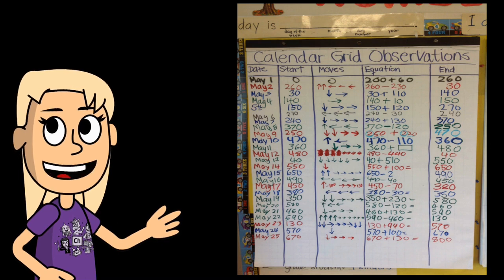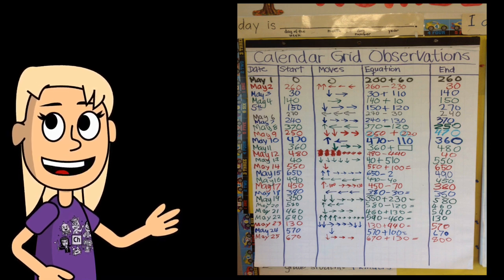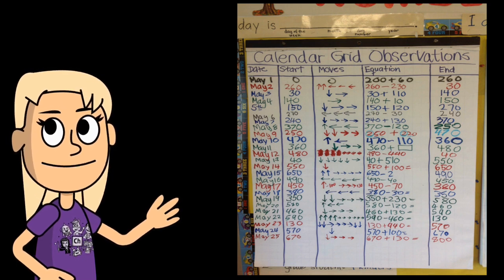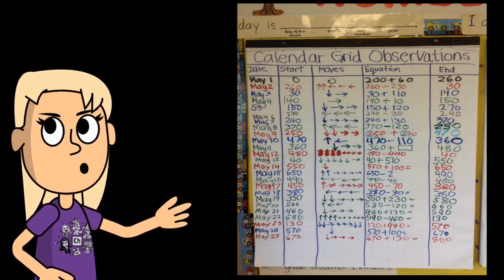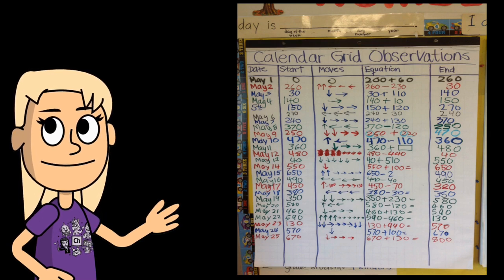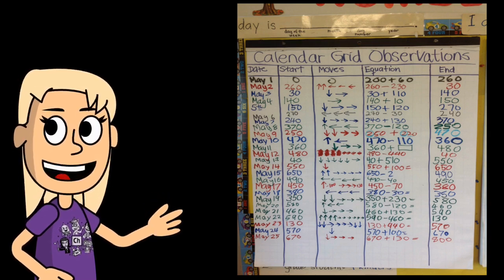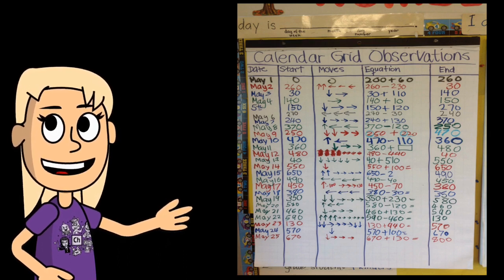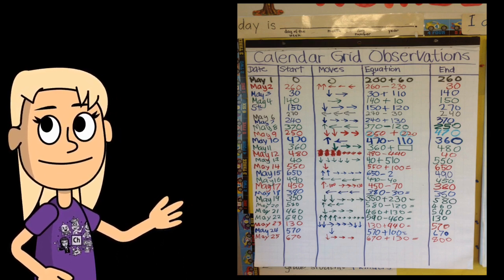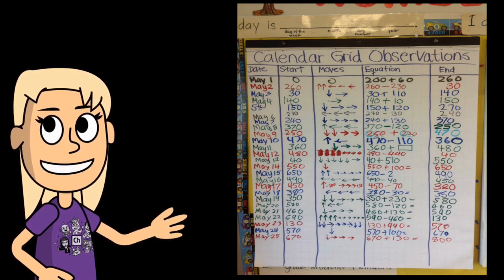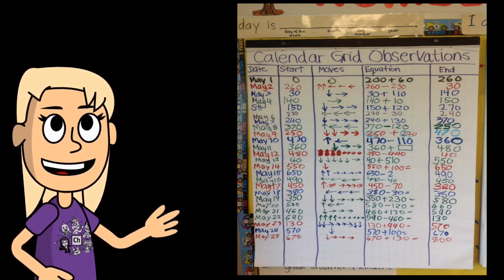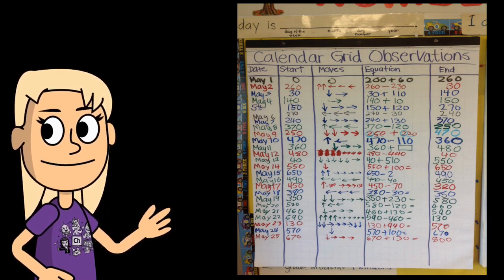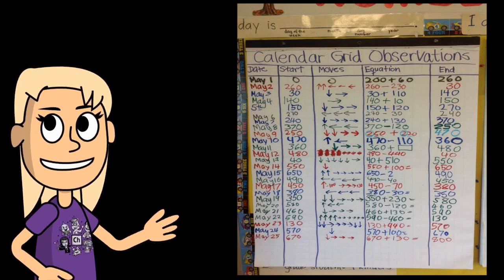Here are some additional tips for presenting Number Corner to students. Make it interactive. Use activities that get students moving and talking. Make it visual. Use pictures, diagrams, and manipulatives to help students understand the concepts being taught. Make it relevant. Tie the activities to the students' interests and experiences. And finally, make it fun. Number Corner should be an enjoyable experience for students.